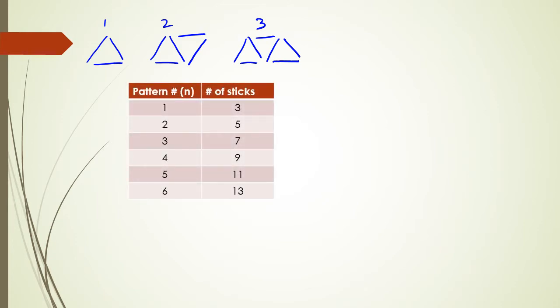So a classic example you're going to see is like one of this. Design number one has three matchsticks like this, design number two has two more matchsticks added, design number three has another two more, and it just keeps going. If I make this as a table, pattern number one has three sticks, pattern number two has five sticks, pattern number three has seven, and so on.